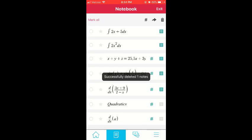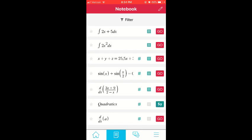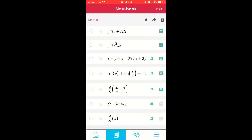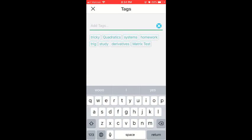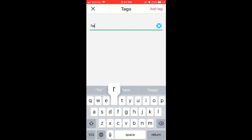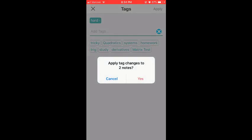To add a tag to any problem, click the edit icon, then select which problems you'd like to add a tag to. Then click the pound sign in the top right. Add a tag to help you categorize your problems, then click apply once you're done.